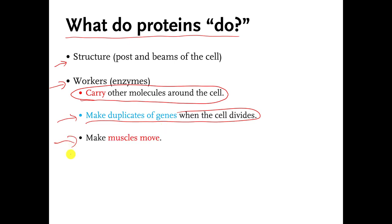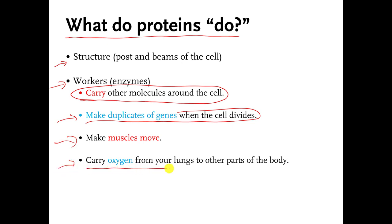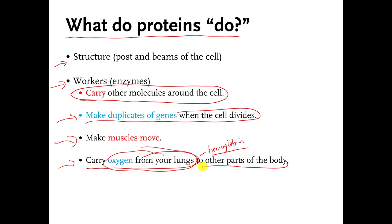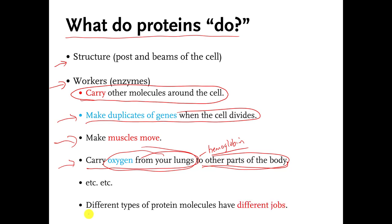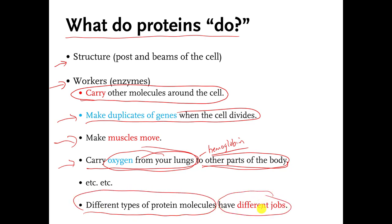There are protein molecules that help make your muscles move. There are protein molecules that carry oxygen from your lungs to other parts of your body — you may have heard of this one. It is a protein molecule called hemoglobin. Hemoglobin's job is to pick up oxygen from your lungs and carry it to other parts of your body that need it. The punchline of this slide is that there are many different types of protein molecules and each type has its own special job.